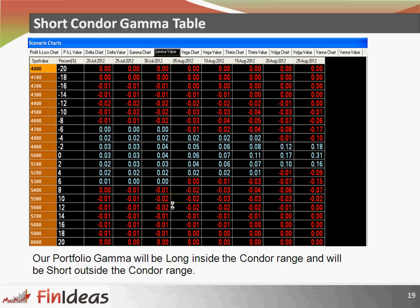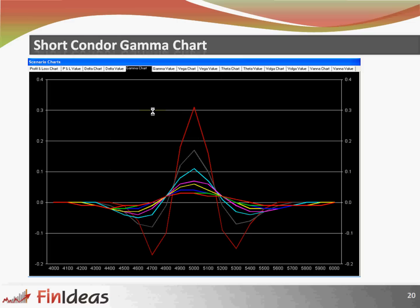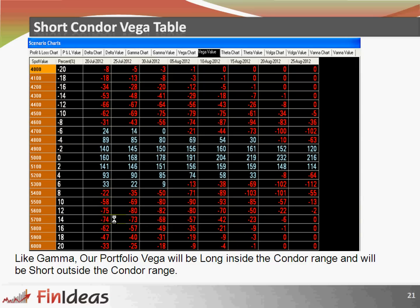Short condor gamma table: our portfolio gamma will be long inside the condor range and short outside the condor range. We are having long gamma inside the condor range, and as soon as we break the condor range we are having negative gamma on both the upside and downside. The graph also confirms that within the condor range we are having positive gamma, and as soon as we break the condor range upside or downside we are having negative gamma.